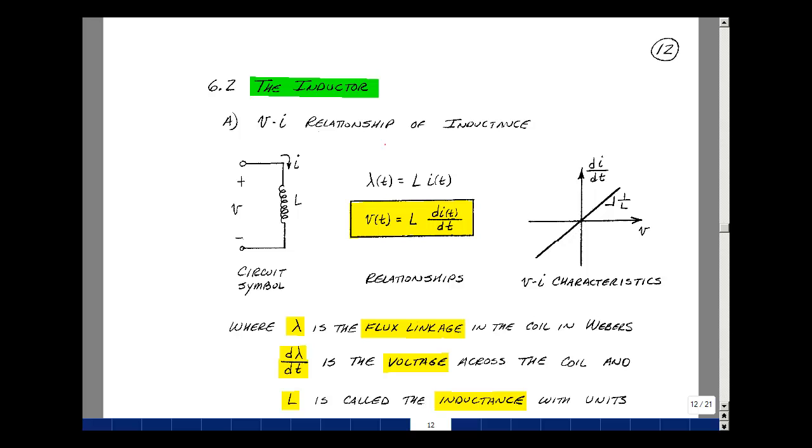Now for capacitance we had Q equals C times V and the energy was stored in the charge. The analogous idea for inductance is a thing called flux linkage and we're going to use this symbol lambda. It refers to the lines of force that we create very much like that of a magnet. The units for this are named after Wilhelm Weber.